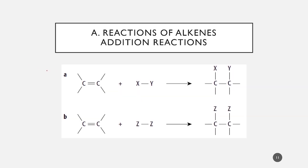Now moving to the reactions of alkenes. Alkene reactions are based around the double bond. The double bond makes alkenes unsaturated hydrocarbons that can undergo addition reactions and form corresponding saturated compounds. First the double bond will break, then two sigma bonds form between another two atoms or compounds. This is what we call an addition reaction.